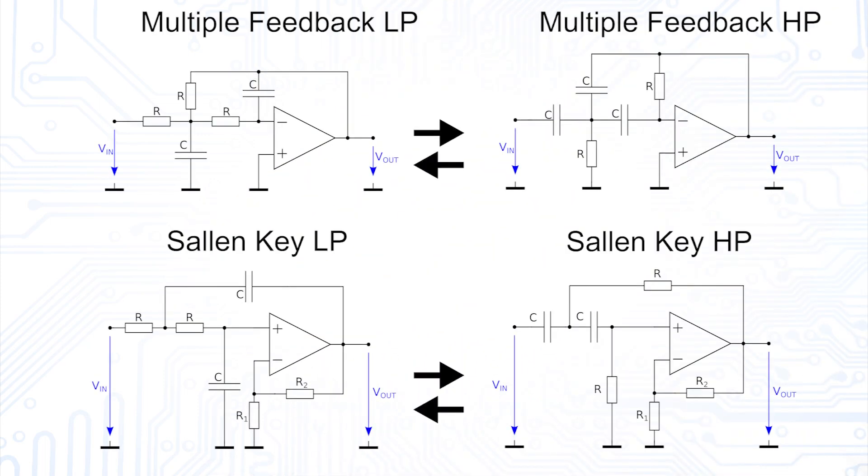If we want to use the filters as high-pass instead of low-pass, we just have to swap all resistors and capacitors. For both variants, it has to be said that due to the lack of speed and the resulting low-pass behavior of the operational amplifiers, they are not suitable for high-pass filters after a certain point.